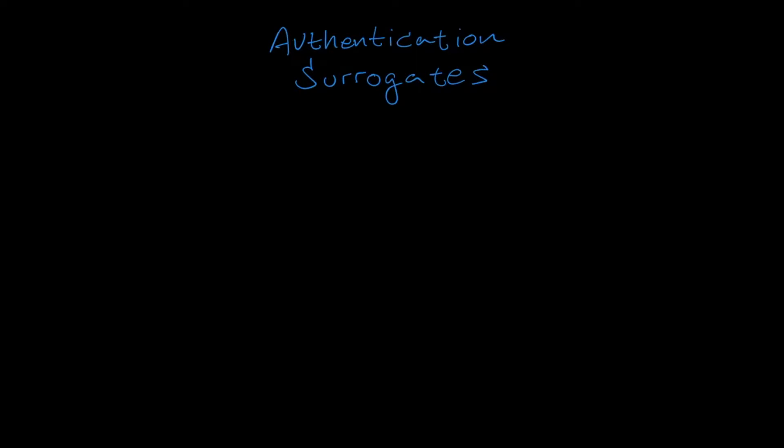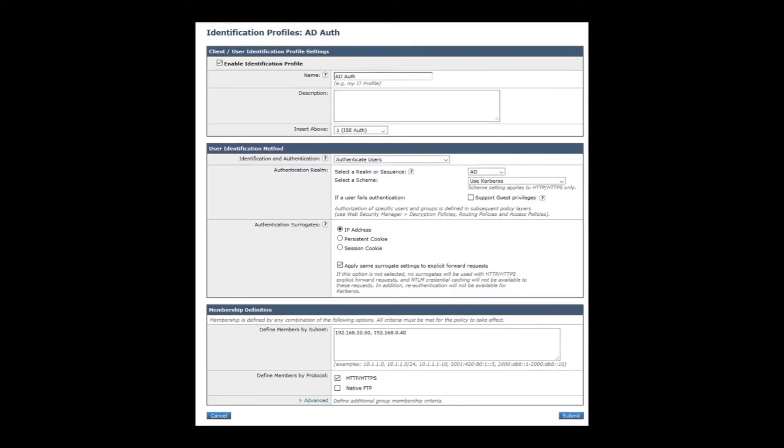The Web Security Appliance offers three surrogates that can be used to remember an authenticated user. These are configured in the User Identification Method section of the Identification Profile and include IP Address, Persistent Cookie, and Session Cookie.